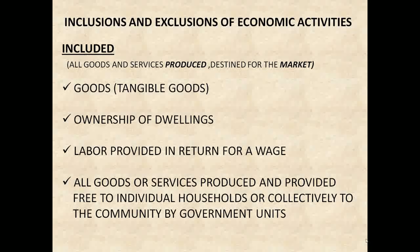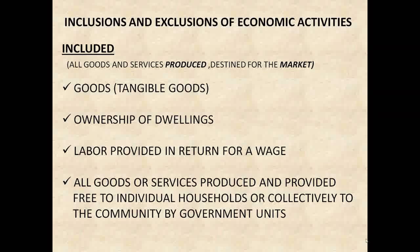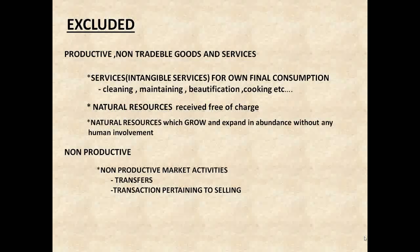Not all economic activities are included within the calculation of national accounting. The main inclusions within national accounting are tangible goods, ownership of dwellings, labor provided in return for a wage, and all the goods or services produced and provided free to individual households or collectively to the community by government units — all of these are included in the calculation of national accounting.